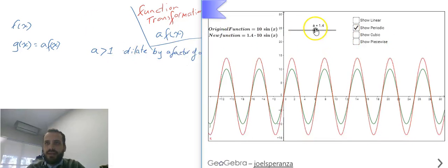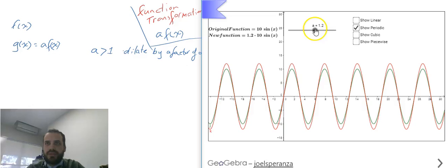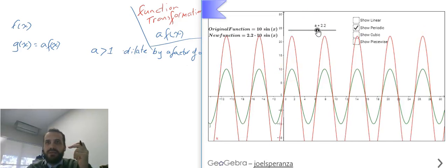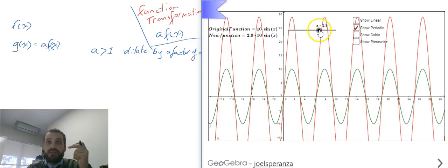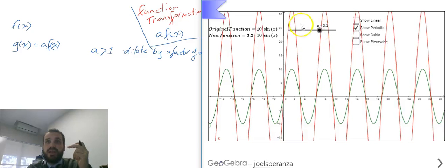So what that means is that if we started here, and you can see that peak in the green one is at 10, if the a value is 2, that peak is going to be double that. That peak is going to be at 20. If the a value is 3, it's going to be 3 times that, 30.